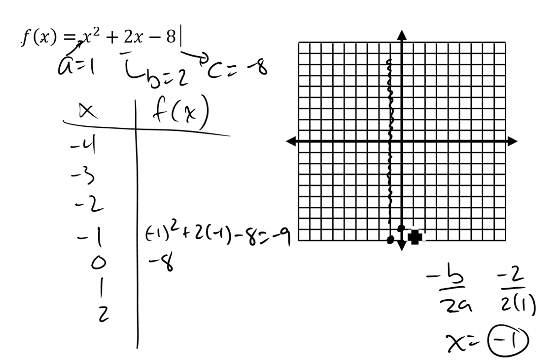If I go to 1, this function becomes 1 squared plus 2 minus 8. So it looks like 3 minus 8 or negative 5. So I'm at 1, 2, 3, 4, 5. There's the number negative 5.